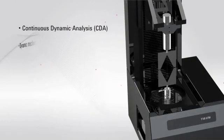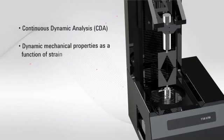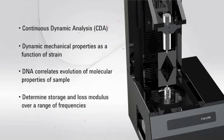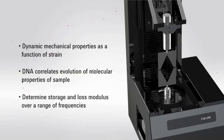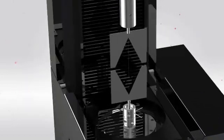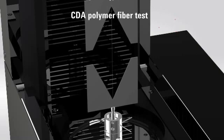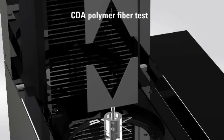Keysight's Continuous Dynamic Analysis Mode, or CDA, allows the continuous measurement of dynamic modulus as a function of strain. This type of operation, which is unique to the Keysight T150, enables users to measure mechanical properties of time-dependent and viscoelastic materials continuously as the material is strained. As seen in the illustration, CDA works by superimposing a sinusoidal oscillation on the load cell while pulling the sample with the crosshead.